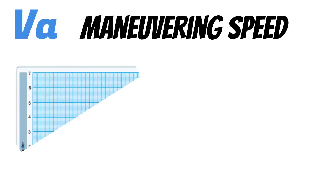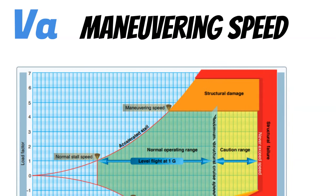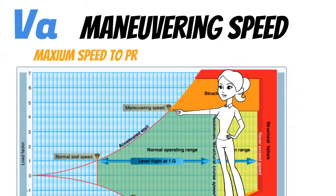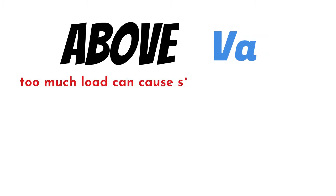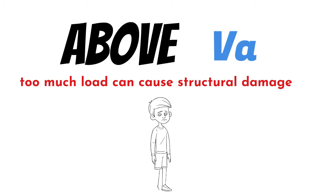Now let's discuss maneuvering speed. This is VA. We talked about maneuvering speed in our lesson on load factor. Maneuvering speed is the fastest airspeed you can fly without causing structural damage if you make a sudden input to one of the control surfaces or you run into turbulence. At maneuvering speed and below, if you put too much of a load on the airplane, you will stall before structural damage can happen. Above VA, if you put too much load or G's on the airplane, you can cause structural damage or structural failure — and an airplane without wings can be kind of tricky to fly.